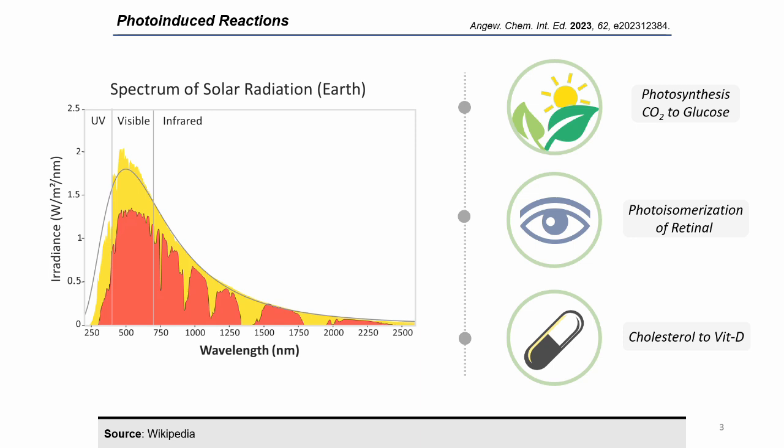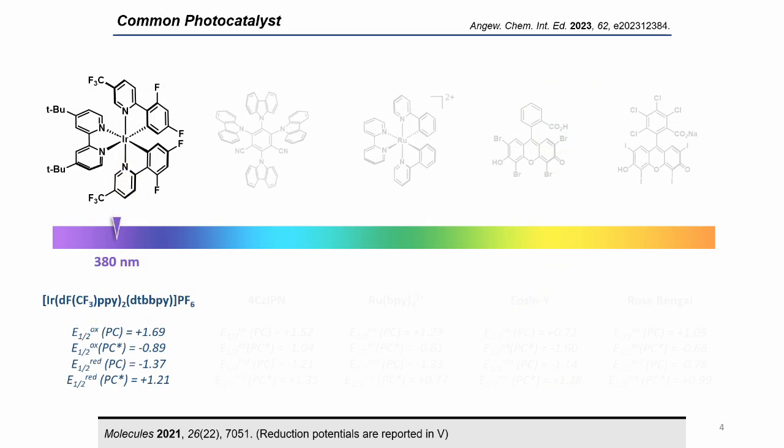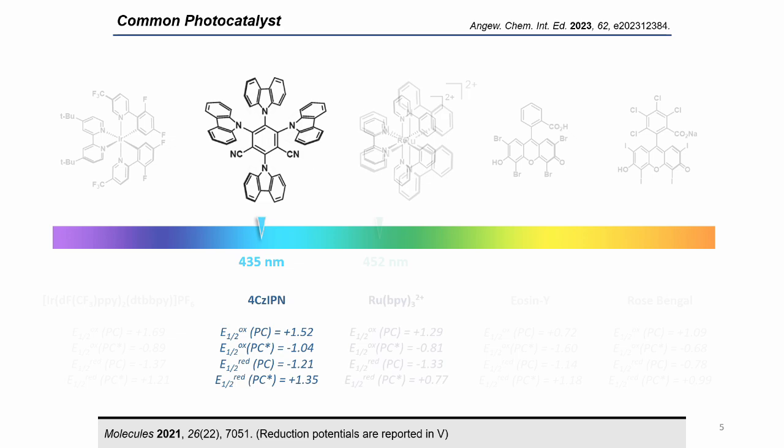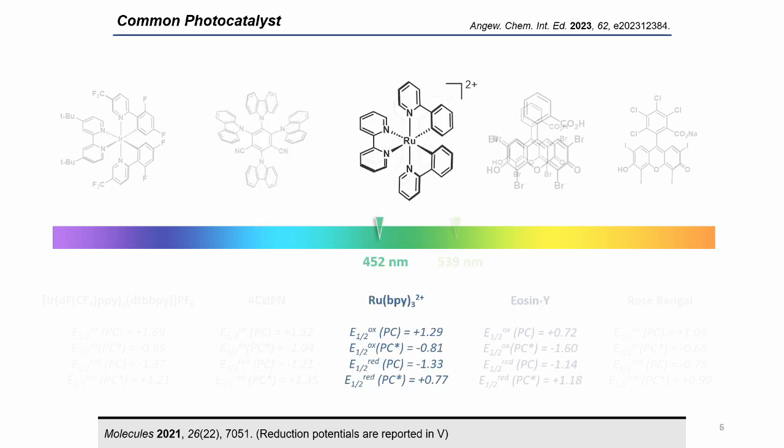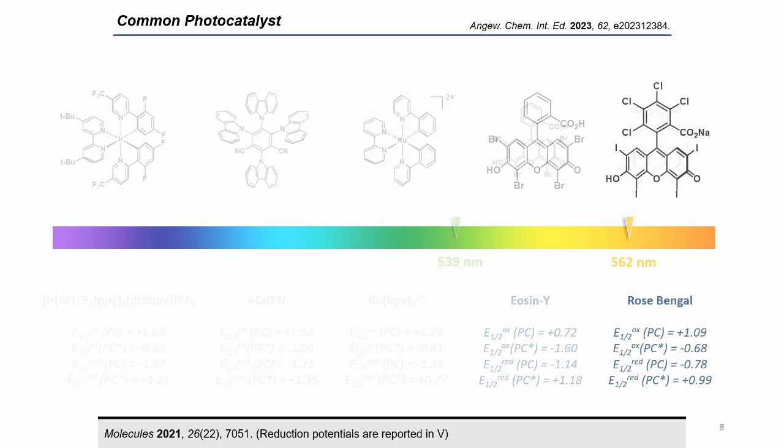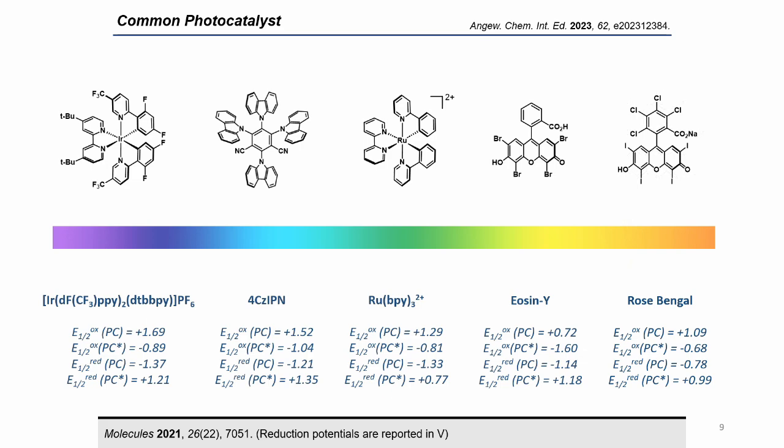However, not all organic molecules can absorb visible light directly. Therefore, we need photoactive molecules or a photocatalyst to transfer visible light into chemical energy. These are some commonly employed photocatalysts and their absorbance regions, which differ due to their varying redox potentials at the ground state and excited state.